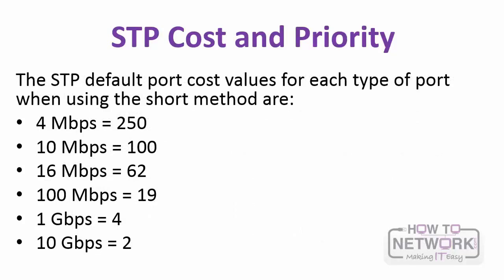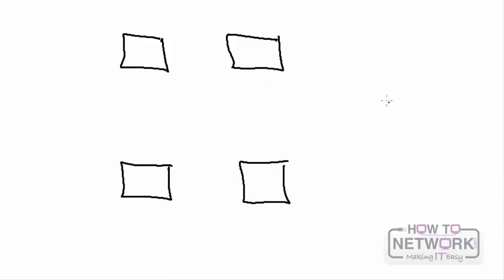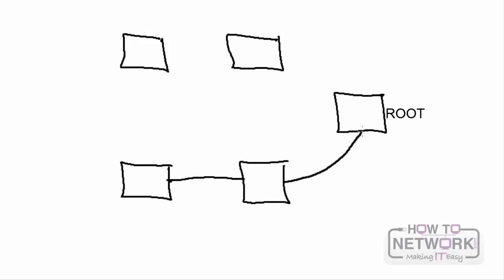The spanning tree default port cost depends on interface speed — the higher the speed, the lower the cost. This comes into play when spanning tree calculates the best path to root. For example, with five interconnected switches, spanning tree will decide which ports should be root ports and which should be designated ports based on cost. If the switches aren't all the same speed — for example, if one is a 10 Mbps switch — the cost calculations will differ accordingly.